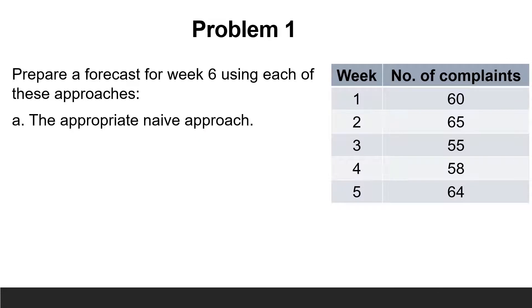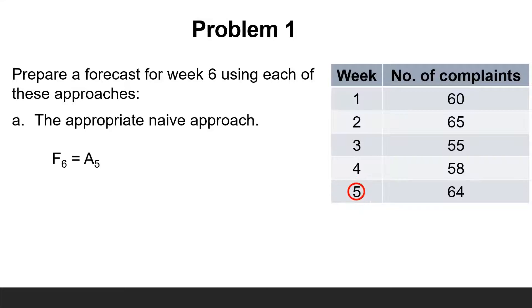The first technique is the appropriate naive approach. Since the data vary around an average, the forecast for week 6 equals the actual number of complaints in week 5, or F6 = A5. So F6 equals 64.